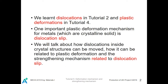We learned dislocations in Tutorial 2 and plastic deformations in Tutorial 4. One important plastic deformation mechanism for metals is dislocation slip, which is related to the motions of dislocations. In this tutorial, we will talk about how dislocations inside crystal structures can be moved, and how it relates to plastic deformation and the strengthening mechanisms related to dislocation slip.